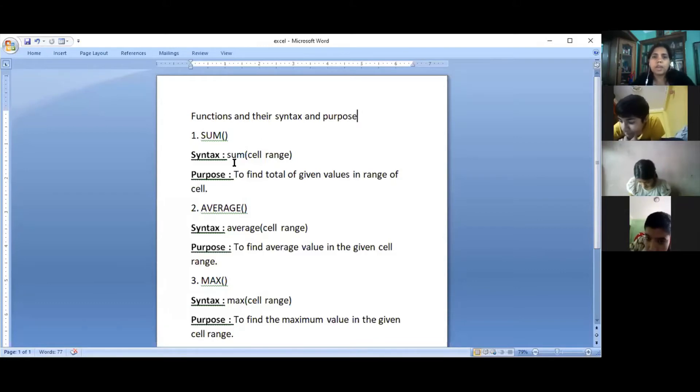Now the first function is SUM. Its syntax is SUM(cell range) and this function is used to find the total of given values in a cell range. When we have to add different values in a range, we use the SUM function. I'll show you an example later. Right now, just know that it is used to find the total of given values in a range of cells, especially in addition cases when we have to add many values at the same time.